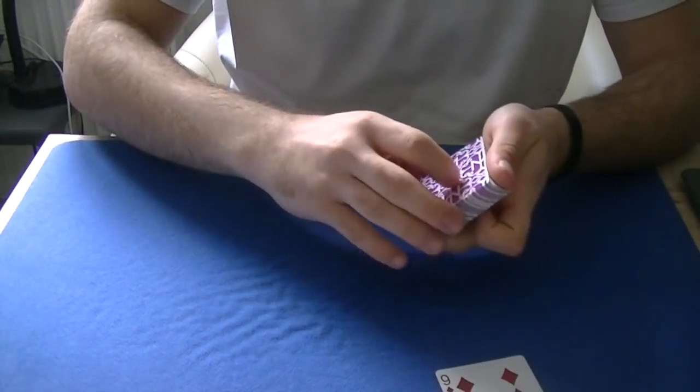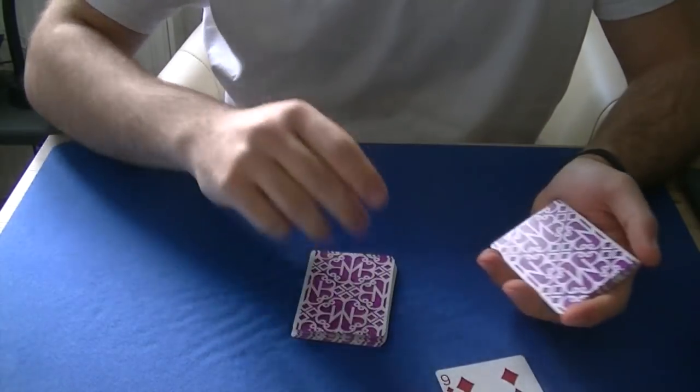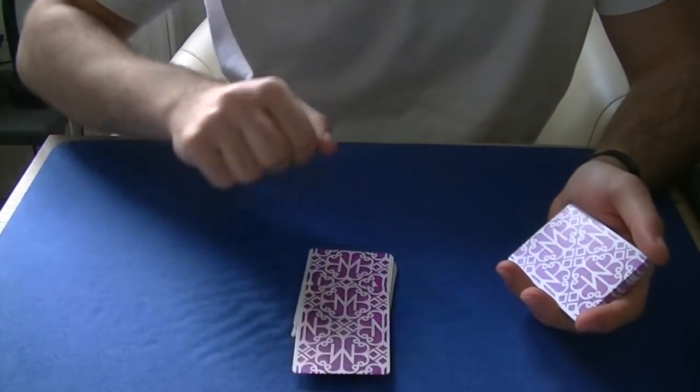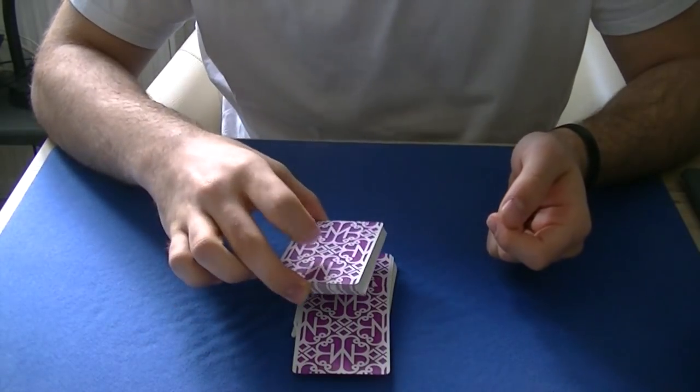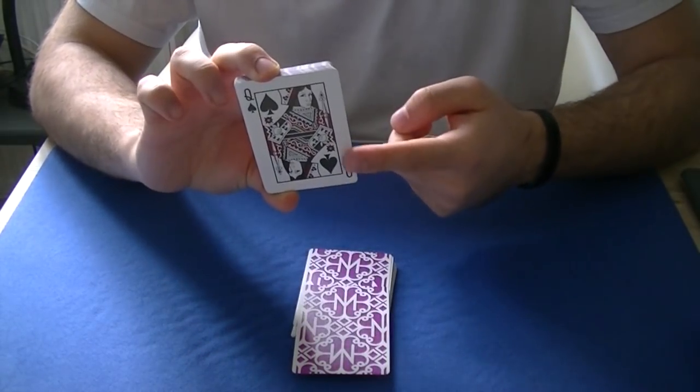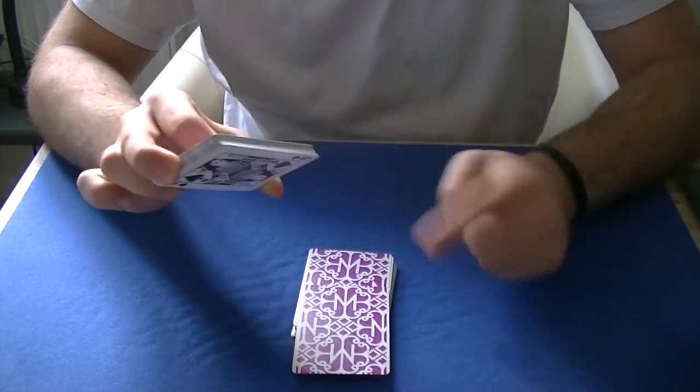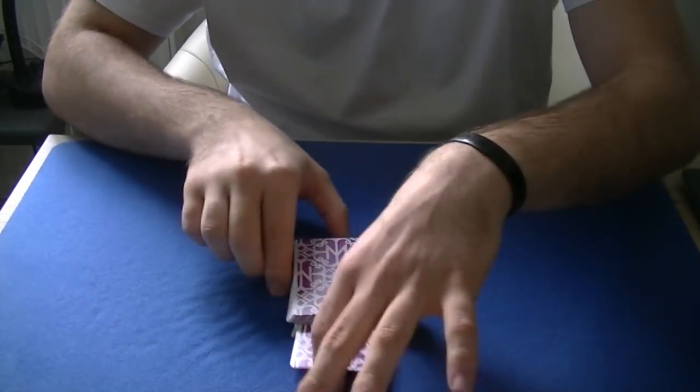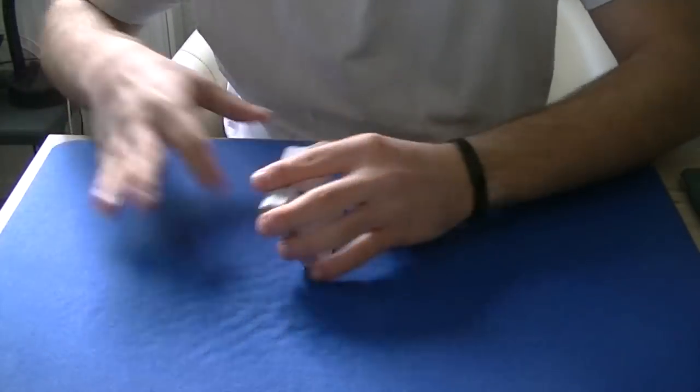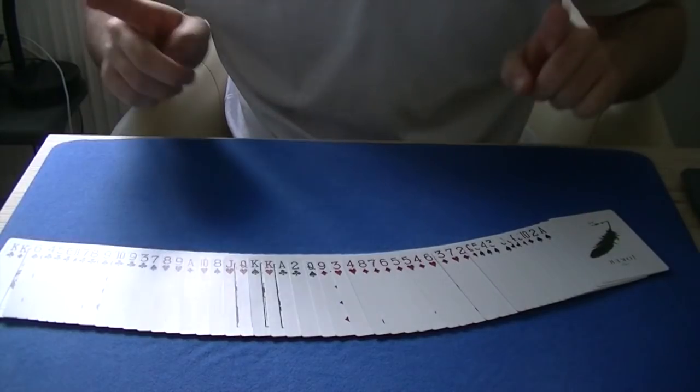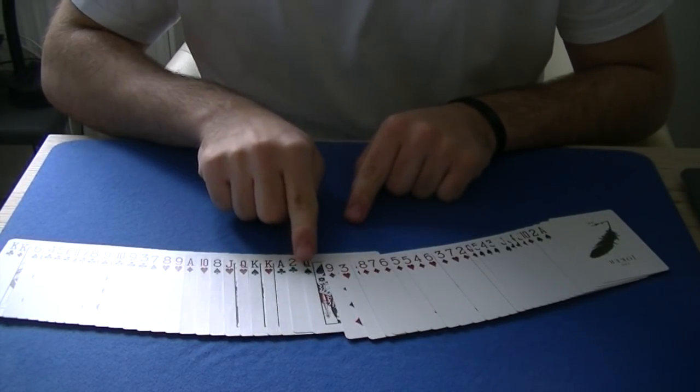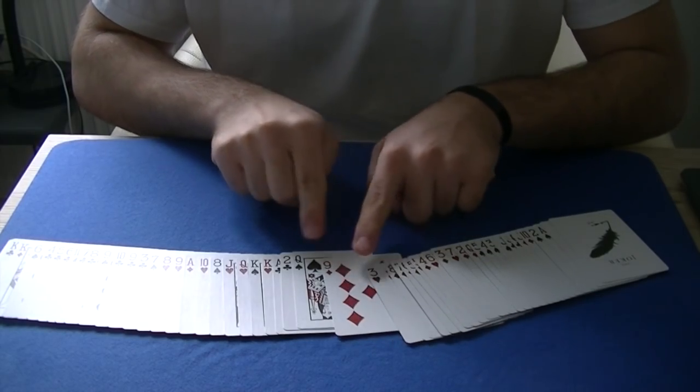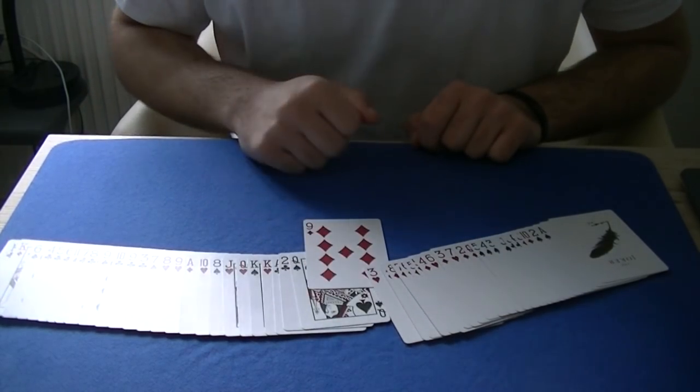At this point you cut half of the cards on the table and ask the spectator to place their card on top. Then you take the remaining cards and place them on top too. Notice that your key card the queen of spades goes on top of their selection. This means when you spread the pack, the card above the queen of spades will be their selection, in this case the nine of diamonds.